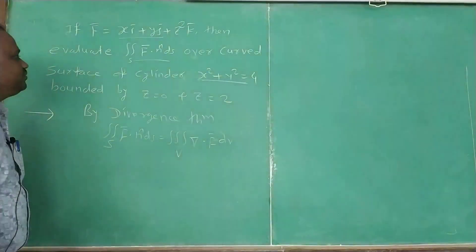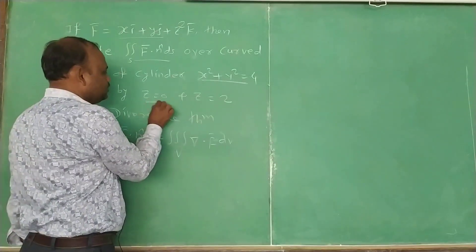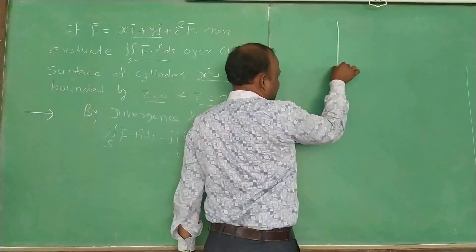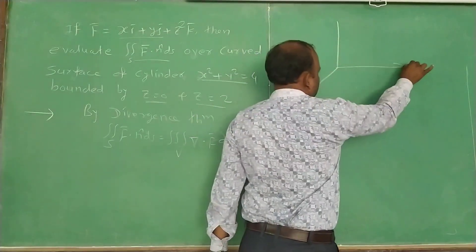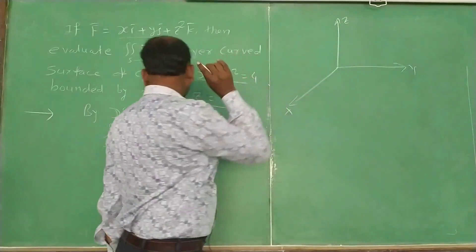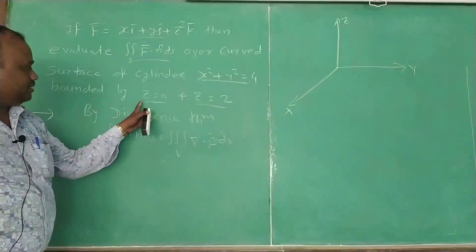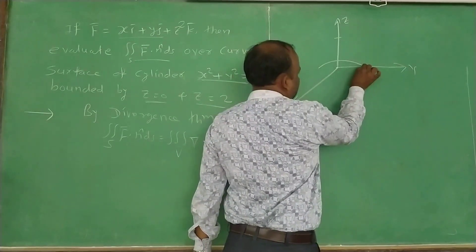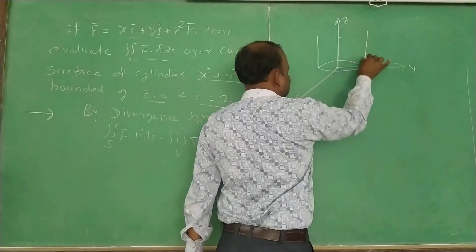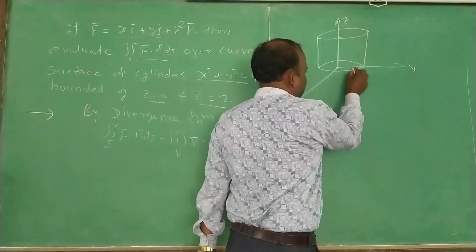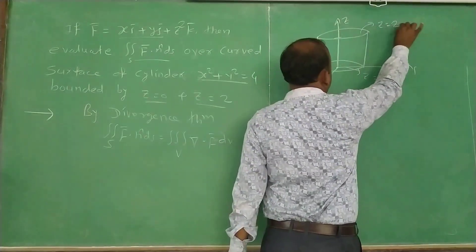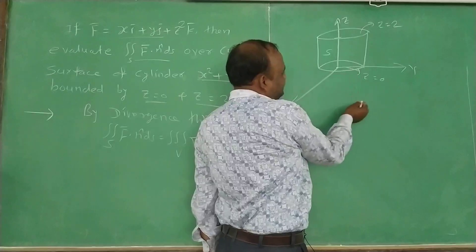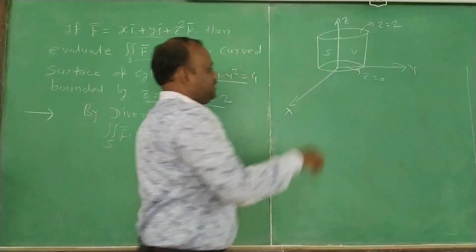Here S is the surface of the cylinder x² + y² = 4, bounded by the planes z = 0 and z = 2. Drawing the cylinder: this is the z-axis, x-axis, and y-axis. The circle x² + y² = 4 is bounded below at z = 0 (origin) and above at z = 2.